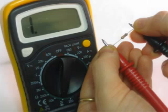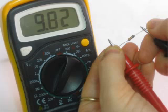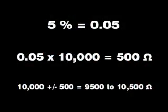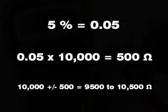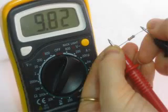Why does the meter display that? Now try changing the meter range to 20k — this time you should get a reading. The resistor measures 9.82k in this picture, so that is 9820 ohms. Why is it not exactly 10k? Remember, the fourth band means this is within 5%. 0.05 times 10,000 is 500, so this resistor should be within 10,000 plus or minus 500, or 9,500 to 10,500. So the resistor in this picture is within tolerance. Is yours?